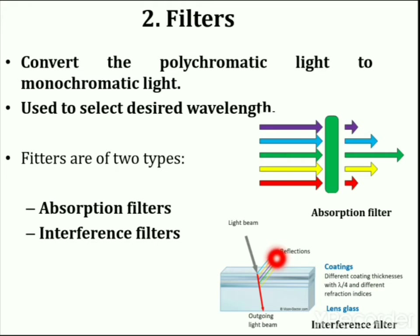An interference filter is an optical filter that reflects one or more spectral bands or lines and transmits others. It maintains a nearly zero coefficient for absorption of all wavelengths of interest. An interference filter may be high pass, low pass, band pass, or band rejection.